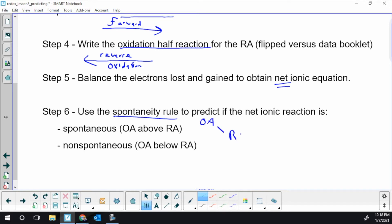If the OA is above the RA, the reaction is spontaneous. If after step five, we find the best OA is below the best reducing agent, we have two weak oxidizing reducing agents. They're not strong enough to spontaneously transfer those electrons. That is like something going uphill.